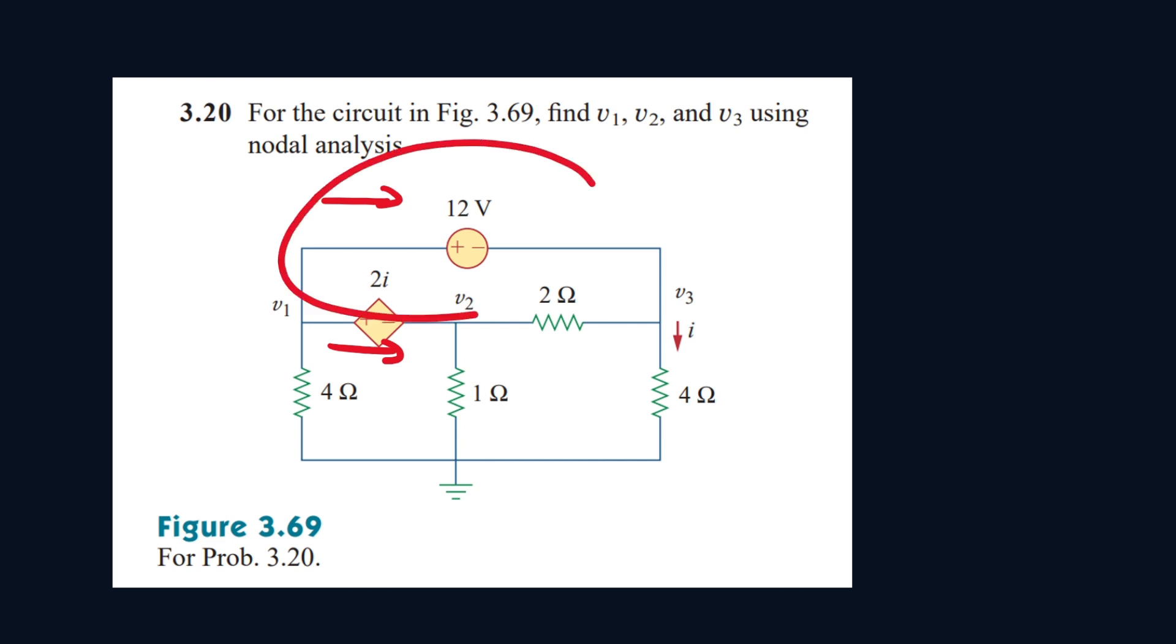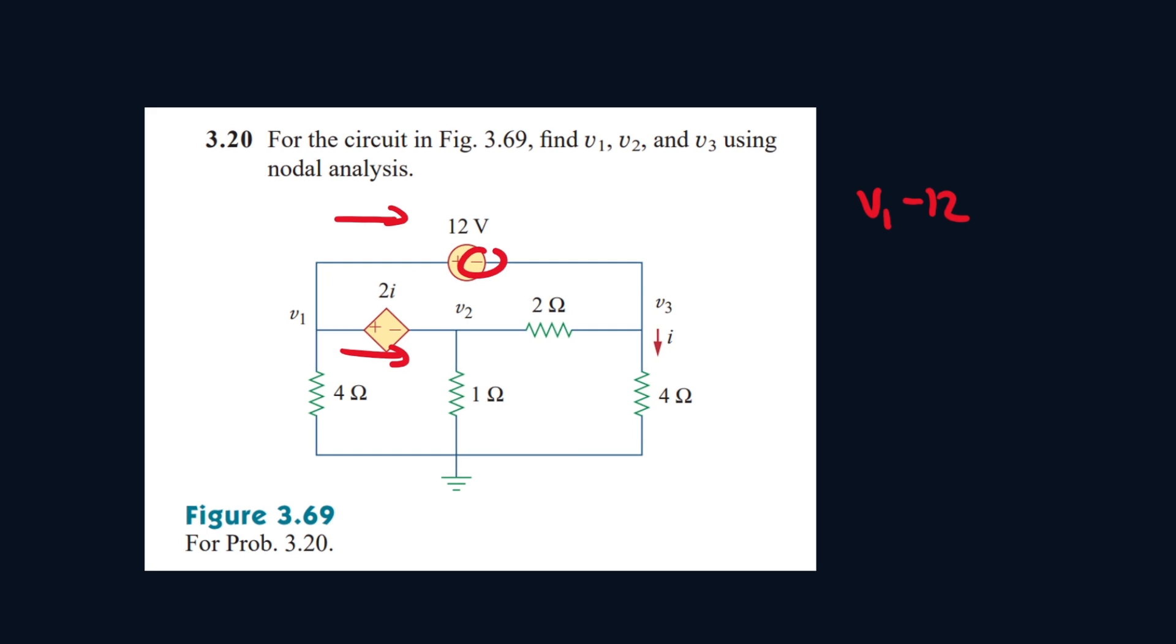Let's write an equation to represent it. So it'll be v1 minus 12 because it's leaving from the negative terminal, and this will be equal to v3.